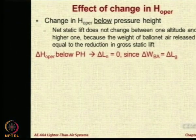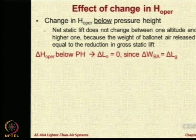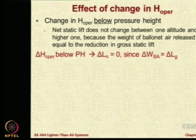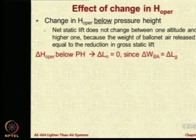To summarize: if the change in operating altitude is below the pressure altitude, then delta L_net, the net lift change, is zero, since the weight of ballonet air released (delta W_ba) equals delta L_gross. This is not true when you go above the pressure altitude, because above pressure altitude we are not throwing out air — we are throwing out gas, which is lighter than air. So to that amount there will be lesser weight loss, and there will be a change in the static lift.